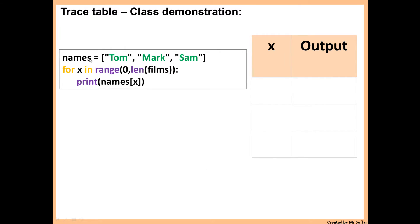We've got an array called names and it's storing Tom, Mark and Sam. Then we have a for loop that's going from zero to the length of films. The length of films is three because you have three items inside.